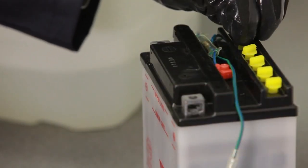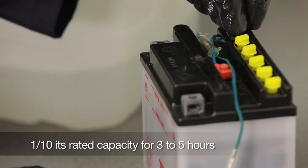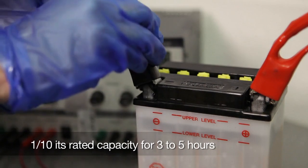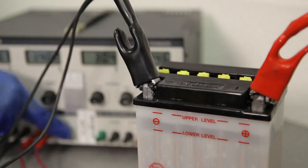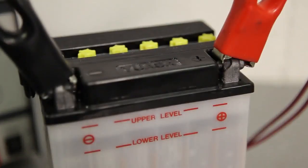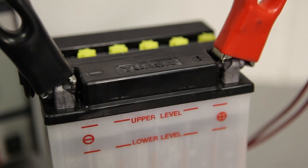Replace the filler caps loosely and begin to charge the battery at one-tenth its rated capacity for 3 to 5 hours. Charging at a higher rate could damage the battery. Do not connect or disconnect the charger to the battery while the charger is switched on, as this may cause sparks that could ignite the hydrogen gas emitted from the cells during charging.